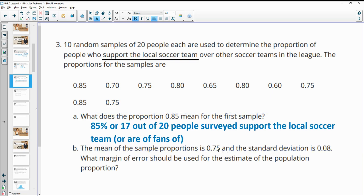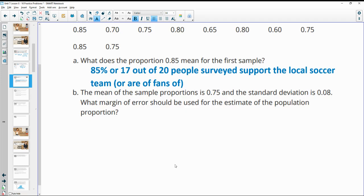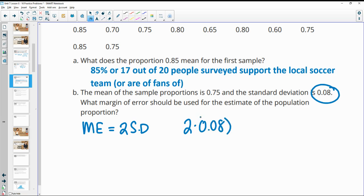The mean of the sample proportion is 0.75. The standard deviation is 0.08. What margin of error should we use to estimate the population proportion? So remember that the margin of error is equal to two standard deviations. And so if the standard deviation here is 0.08, we would just add that twice or subtract that twice from 0.75. So we would go, oh, sorry, I wanted just the margin of error. So just multiply that by twice. We don't need to add it to this. So just the margin of error is going to be two times 0.08. So that's going to be 0.16. So two times the standard deviation gives you that margin of error, 0.16 in this case.